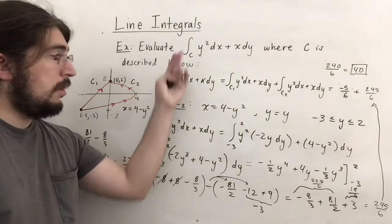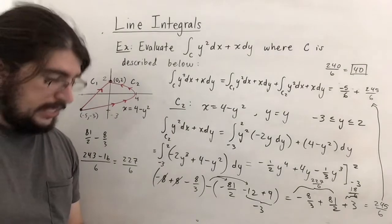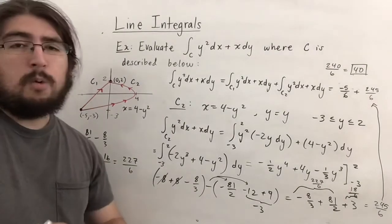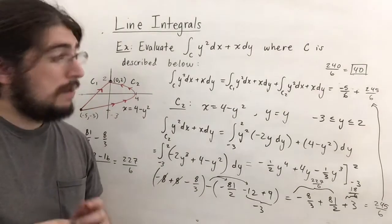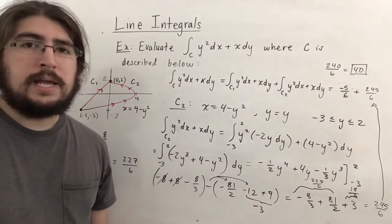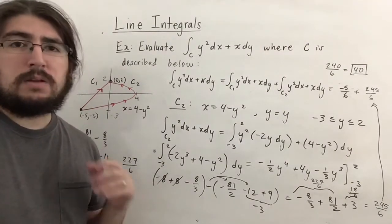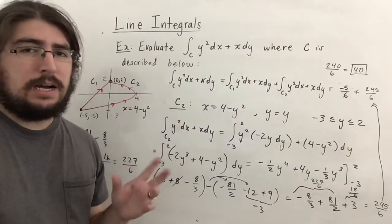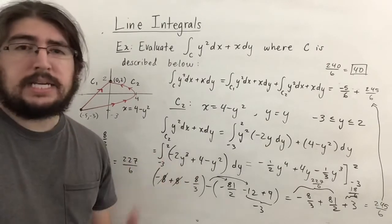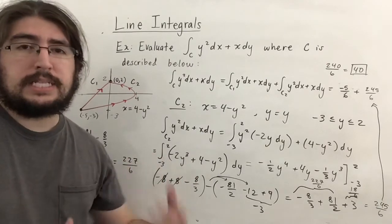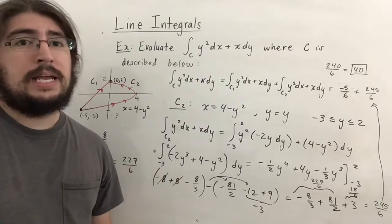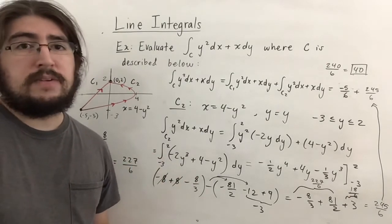Adding the two results: 245 over 6 minus 5 over 6 equals 240 over 6, which simplifies to 40. So the line integral along curve c of y squared dx plus x dy equals 40.